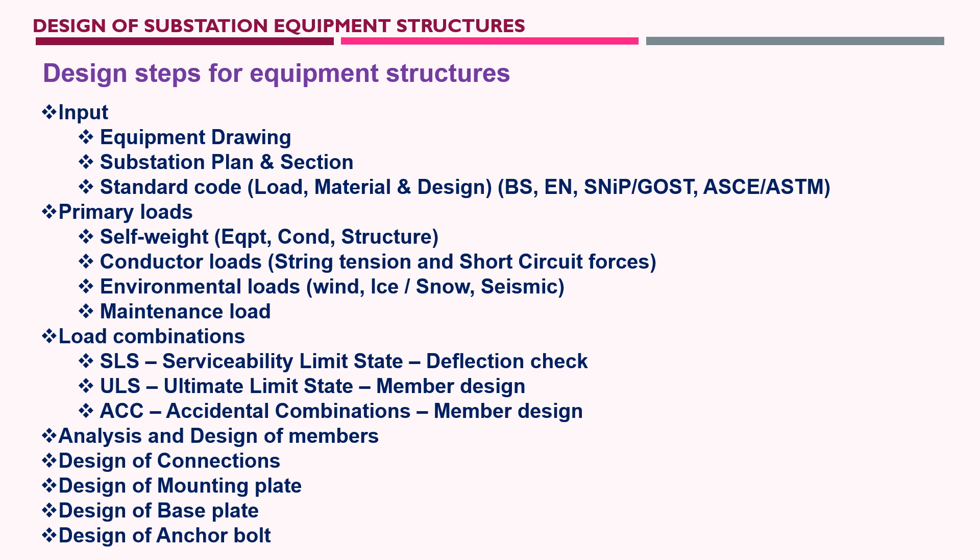For primary loads, the self-weight of equipment, conductor, and structure must be considered. Conductor loads are electromechanical loads — conductor string tension and short-circuit forces — calculated by the electromechanical engineer. Environmental loads include wind, ice, snow, seismic, temperature, and fire as required by project specification. Maintenance loads account for a maintenance engineer climbing the structure, typically 150 kg (1.5 kN) or 100 kg (1 kN) as per standard codes and project technical specifications.